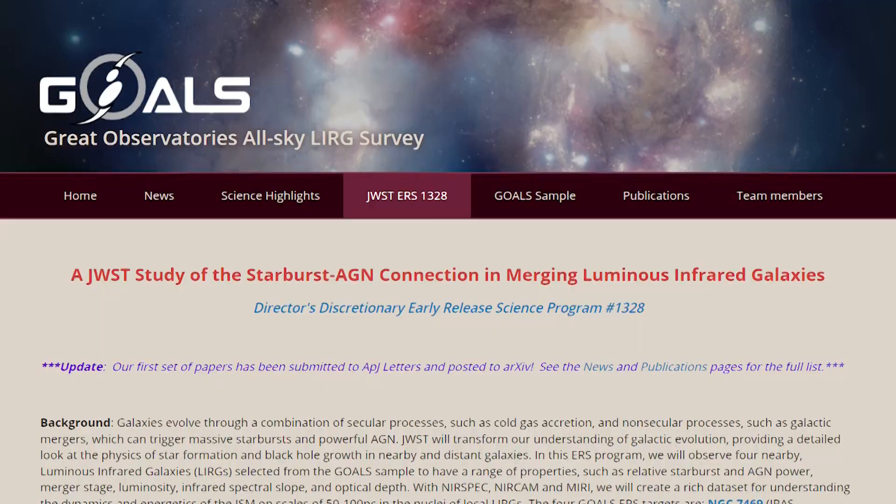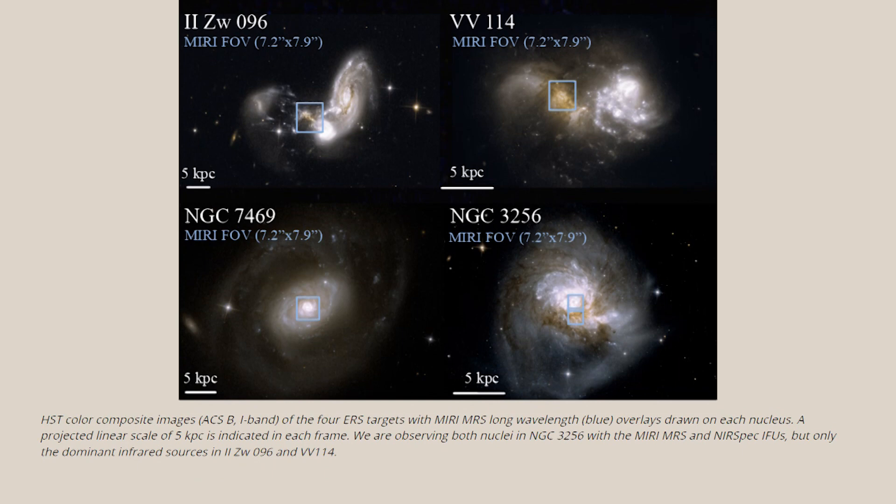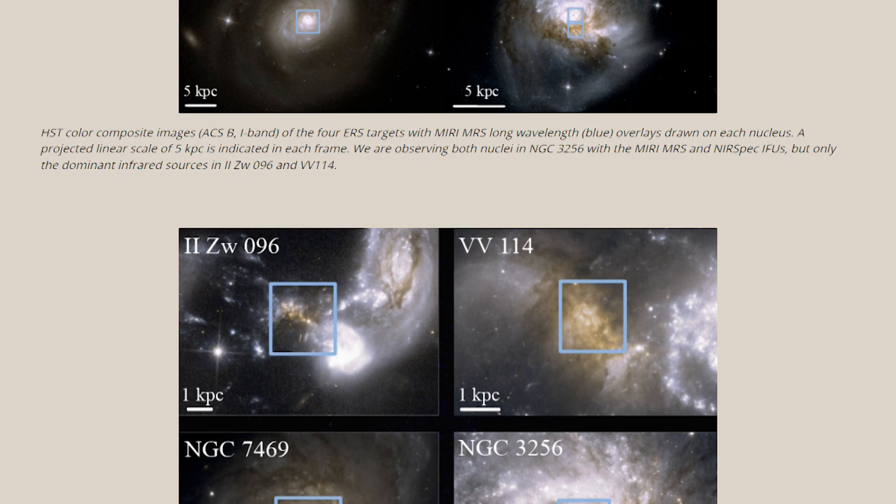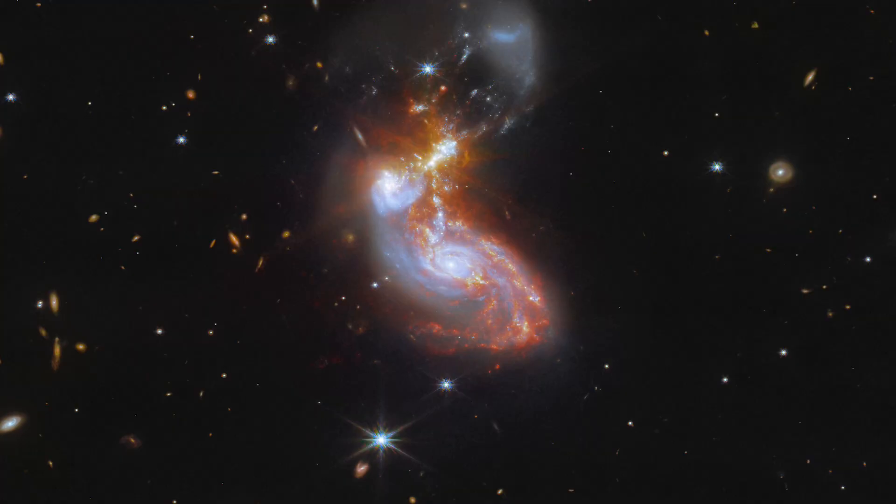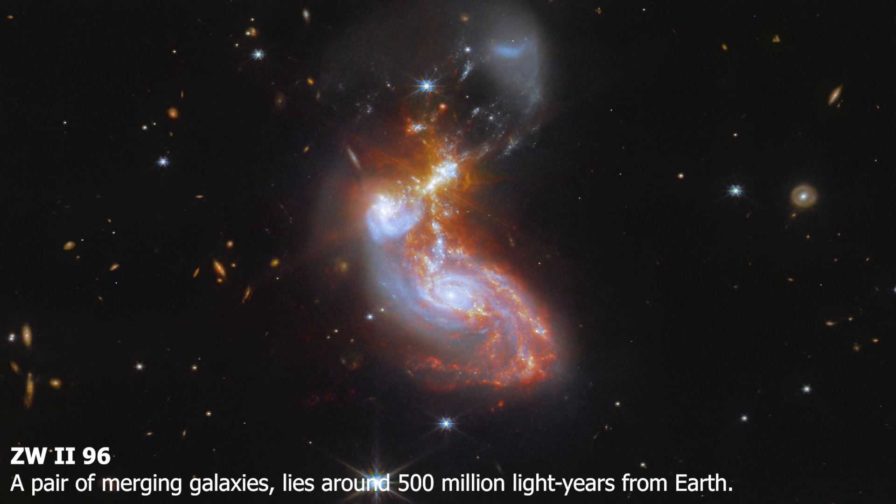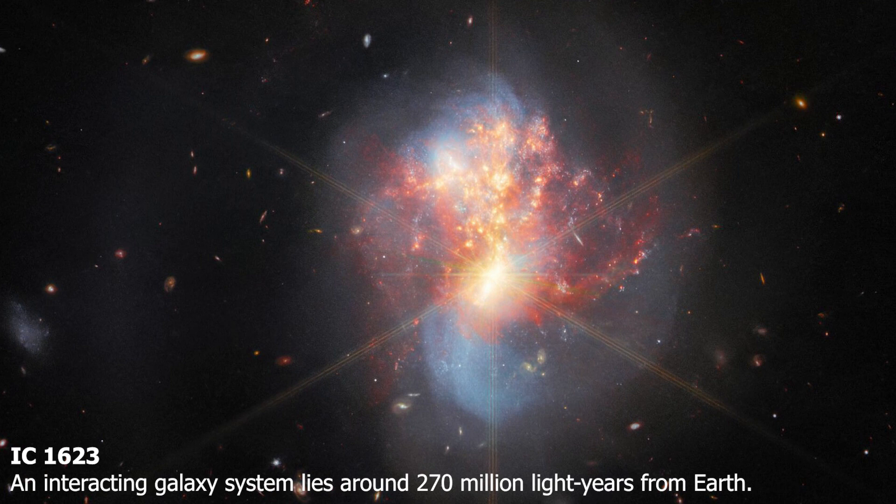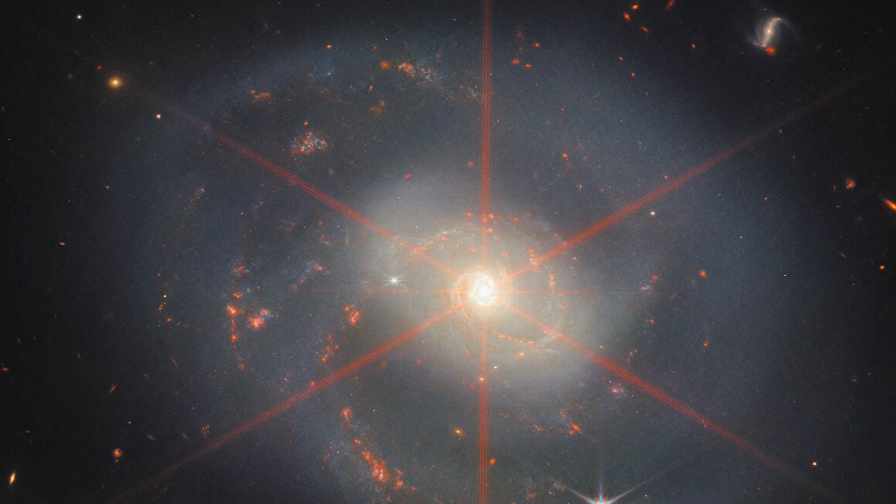The Great Observatory's All-Sky LIRG survey, or GOALS, just included this spiral galaxy in its analysis of four nearby merging bright infrared galaxies to better understand the processes of star formation, black hole growth, and feedback. Previous ESA web pictures of the month include galaxies ZW 096 and IC 1623, which were also analyzed as part of the study.